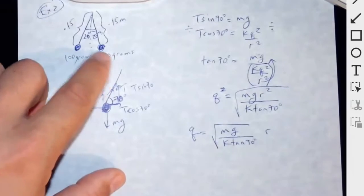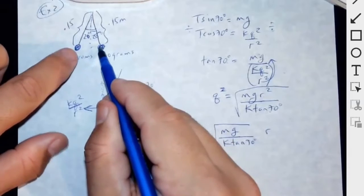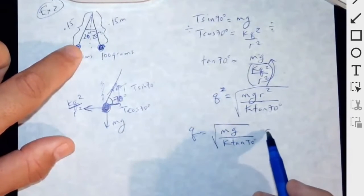In other words, the further these go out from each other, that means the charges were stronger. You see, that's kind of what that is telling you.